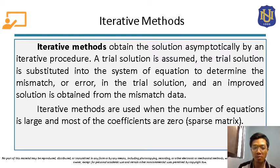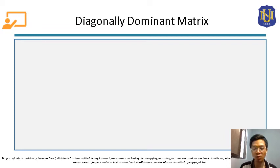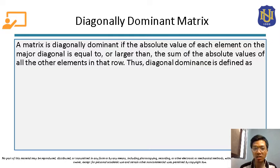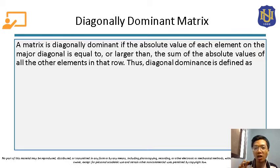Now let's talk about diagonally dominant matrices. In order to use iterative methods, the matrix from the given system of linear equations should be a diagonally dominant matrix. A matrix is diagonally dominant if the absolute value of each element on the principal diagonal is equal to or larger than the sum of the absolute values of all the other elements in that row.